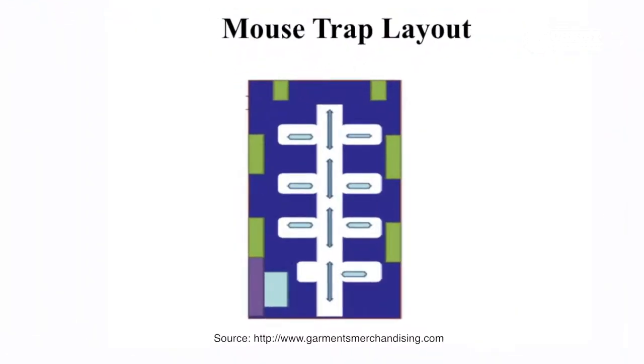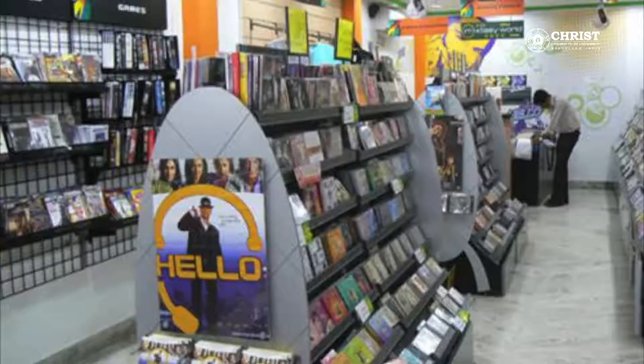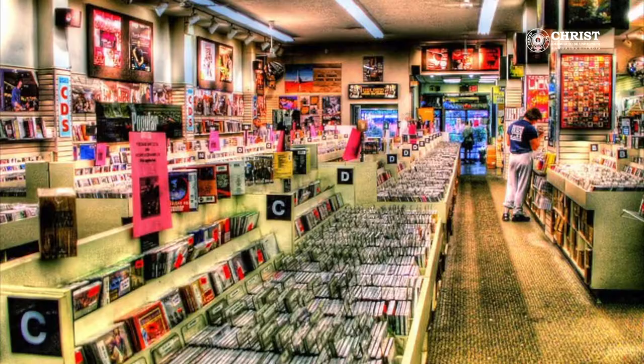As you can see here, the image of a mouse trap layout explains about the restrictions of space inside the store. The examples of few retail stores who adopt this kind of layout are a toy shop in Shubmall Noida, Music World, and Planetium.